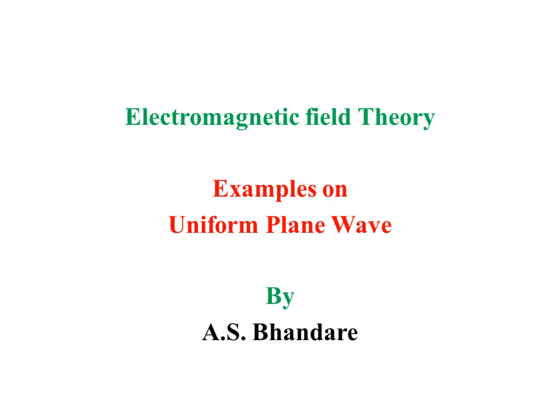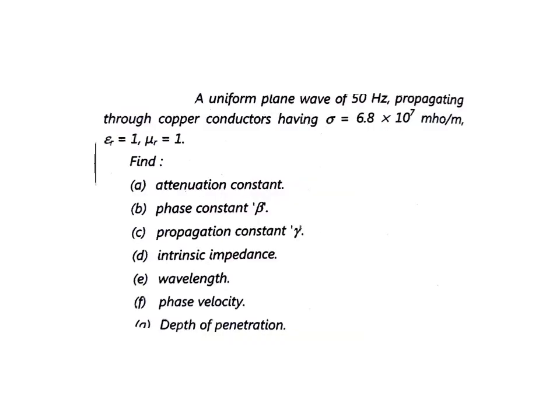Hello, good morning everyone. For today's session we are going to see some examples related to uniform plane waves. So let's start. The first example: a uniform plane wave of 50 Hz propagating through copper, having sigma equal to 6.18 into 10 raised to 7 mho per meter, epsilon r equal to 1, and mu r equal to 1.